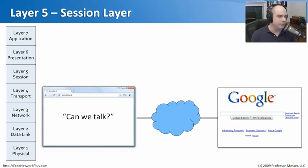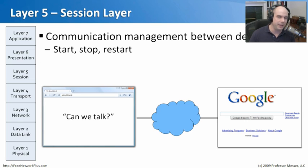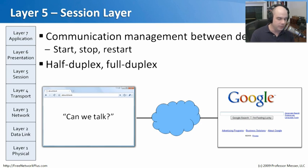Layer 5 is the session layer. Before communicating with a server like Google, you first have to establish whether communication is allowed — starting and managing the session. This layer starts communication, stops it, and can restart sessions as needed. It also handles half-duplex and full-duplex connections — whether devices send in one direction at a time or simultaneously — all managed at layer five.